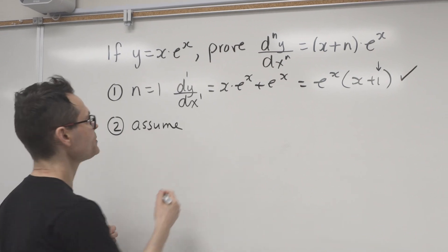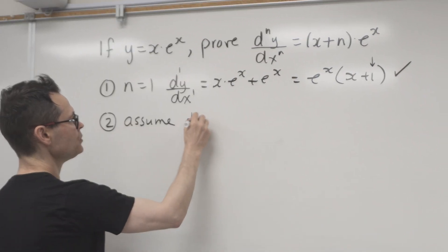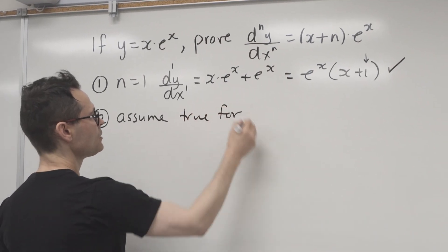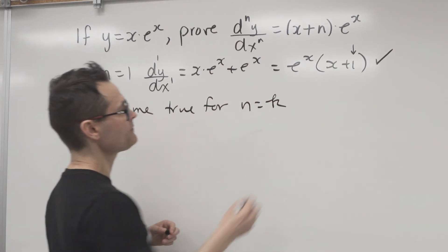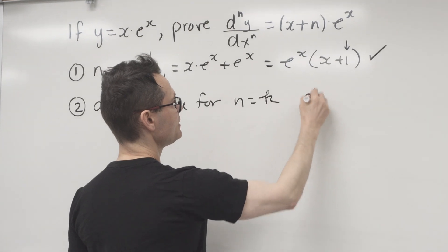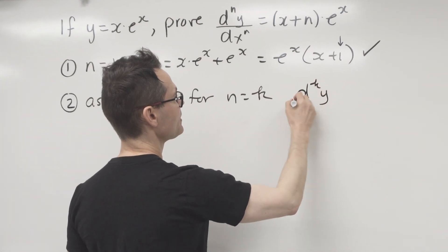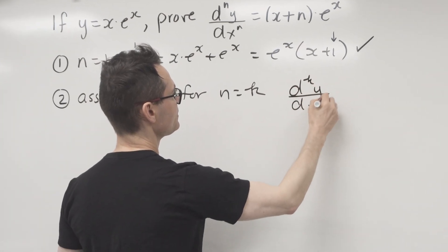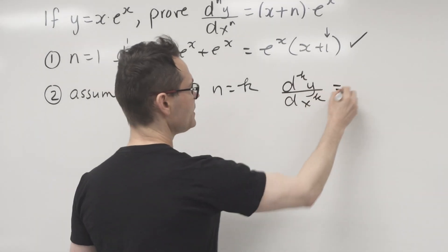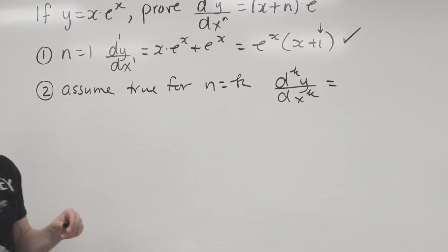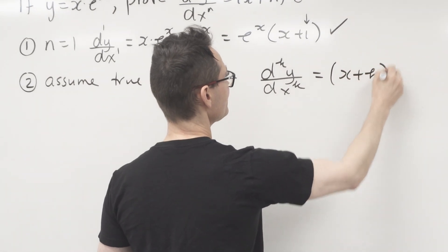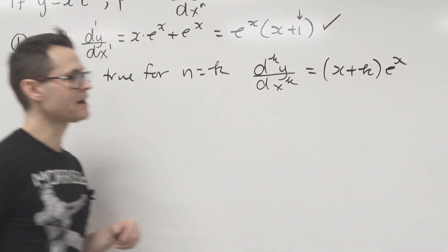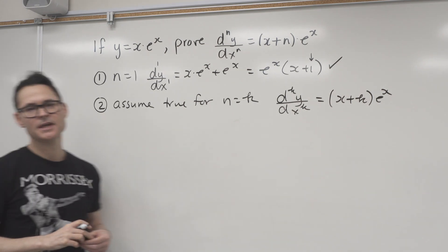So we assume that it's true for n is equal to k. Well, what does that mean? It means that if I take the k-th derivative, so the k-th derivative, that the k-th derivative will be equal to x plus k times e to the x, okay? So we just take that as an assumption.